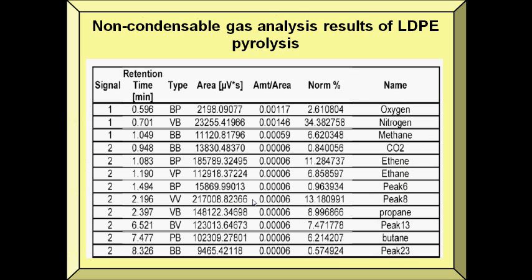Here is the list of the non-condensable gases for low-density polyethylene: oxygen, nitrogen, methane, carbon dioxide, ethylene, propane, and butane.